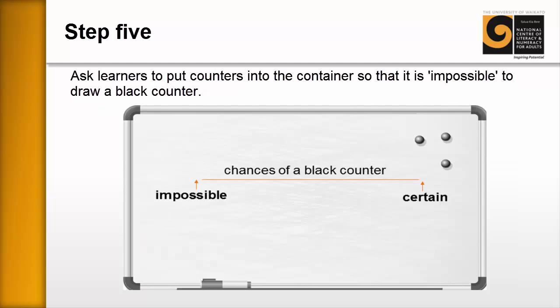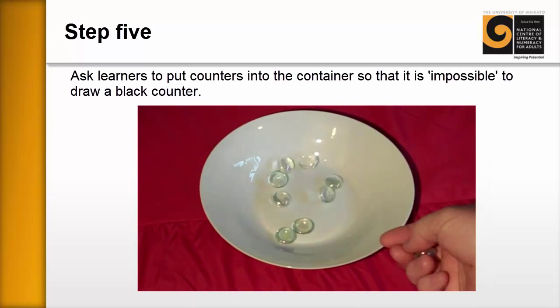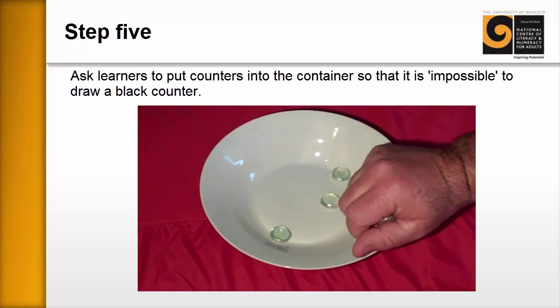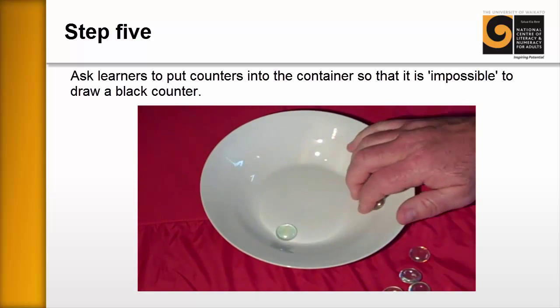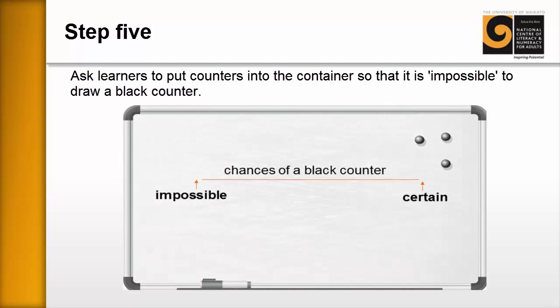Step five, you're just going to repeat this, but you're going to ask them to put counters into the container so that it is impossible, impossible to draw a black counter. And of course the learners will do the same thing. They'll either put one or 10 white counters into the container and that's fine and you just repeat the process again. So now you've clearly defined impossible and certain.